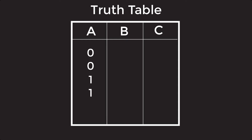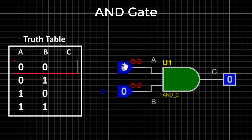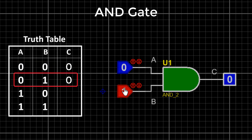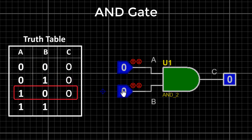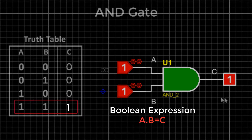Let's apply inputs and see the output. Apply zero and zero — the output is also zero. Apply zero and one — the output is still zero. Apply one and zero — the output is still zero. Apply one and one — the output is now one.